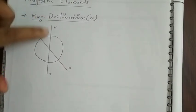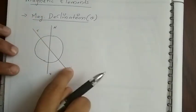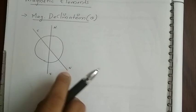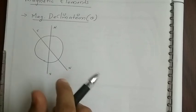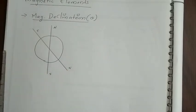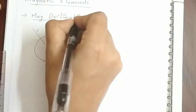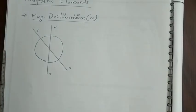Therefore, the angle between these two meridians, or these two directions at any point on the surface of the earth, is known as the magnetic declination, or theta (θ).